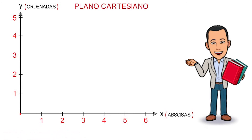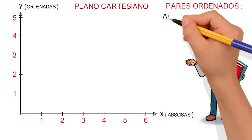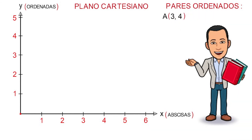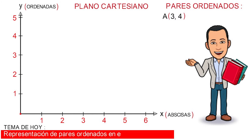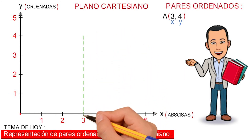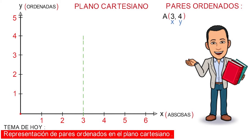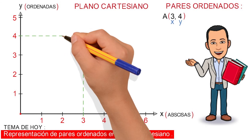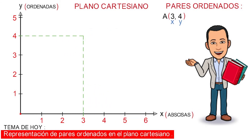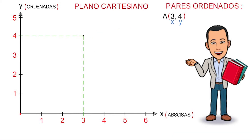A continuación, representaremos algunos pares ordenados con números naturales. Primer punto de coordenadas (3, 4), donde el primer valor lo identificaremos con la letra X, que corresponde al eje de las abscisas, y el segundo valor con la letra Y, que corresponde al eje de las ordenadas. Esto significa que trazaremos una línea discontinua perpendicular al eje X que pase por el valor 3, y de forma similar, una línea discontinua perpendicular al eje Y que pase por el valor 4. En la intersección de ambas líneas se encuentra el punto identificado con la letra A.